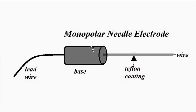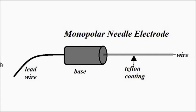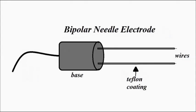Here you can see the monopolar needle electrode: the base is generally made of metal, then we have the thin wire with Teflon coating, and it is exposed at the tip so that it can be inserted into the specific body part. The lead wire carries the signal to the signal conditioning and processing circuitry for output. The bipolar needle electrode is the same, but consists of two Teflon-coated wires instead of one.